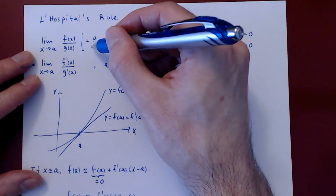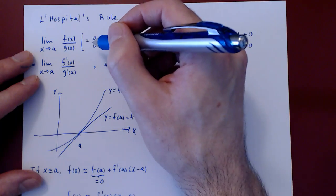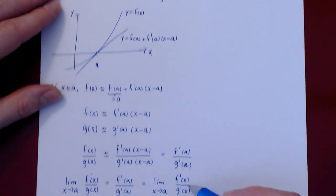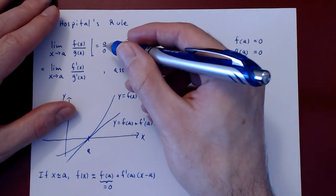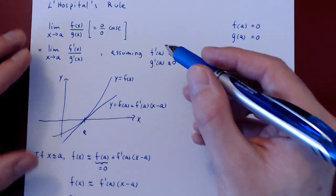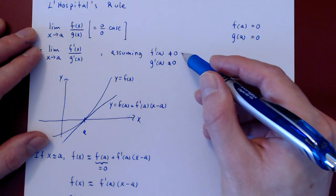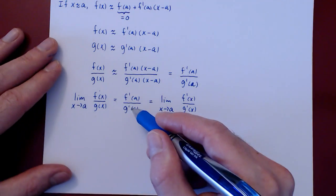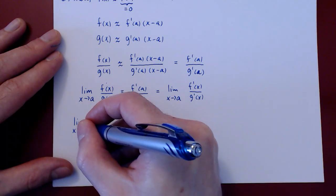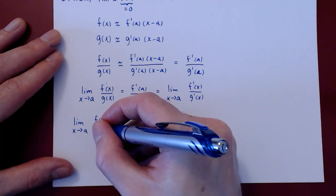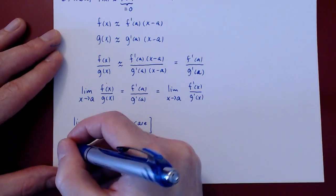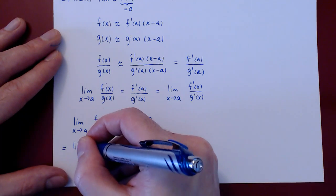That is why the zero over zero case is of critical importance. If this is not true, then the argument through linear approximation breaks down completely and these limits will not be equal. But if the case is zero over zero, they should be. We really only needed g prime of a not being zero — we could have dropped the assumption on f prime of a. As long as g prime of a is not zero, this is well-defined, and the limit of the ratio of the initial functions, if of type zero over zero, should equal the limit of the ratio of the respective derivatives.